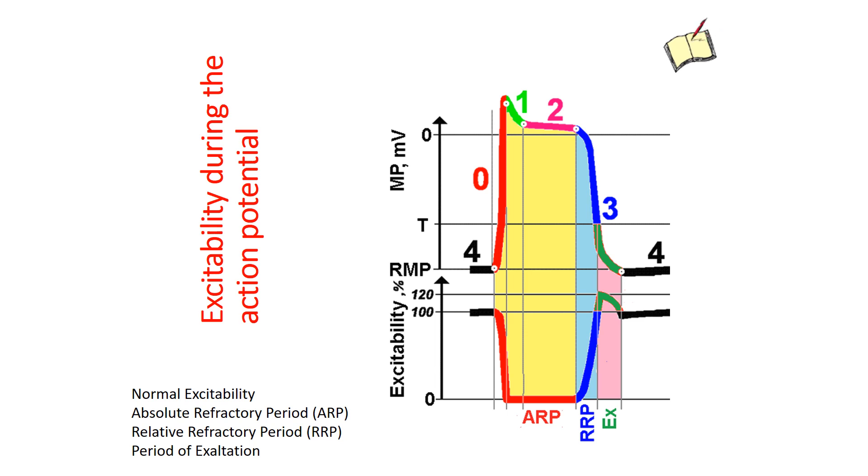The phase of normal excitability, phase 4, corresponds to the period of normal excitability. Black line Phase 0, orange line 1, green line 2, red line on the top graph of the action potential corresponds to the absolutely refractory period ARP, non-excitability, red line on the bottom graph.